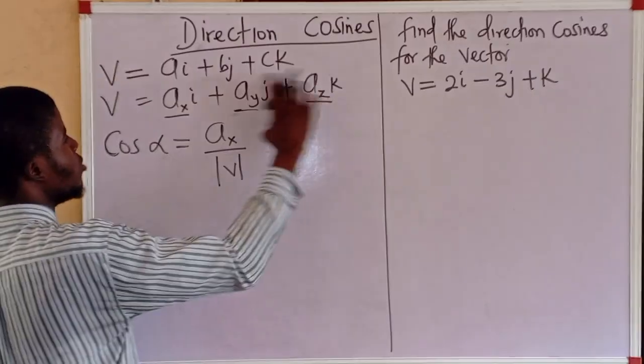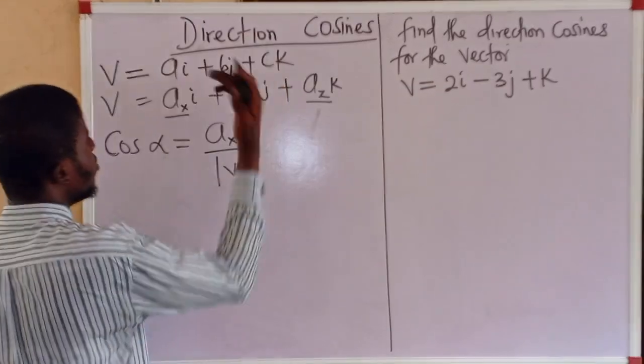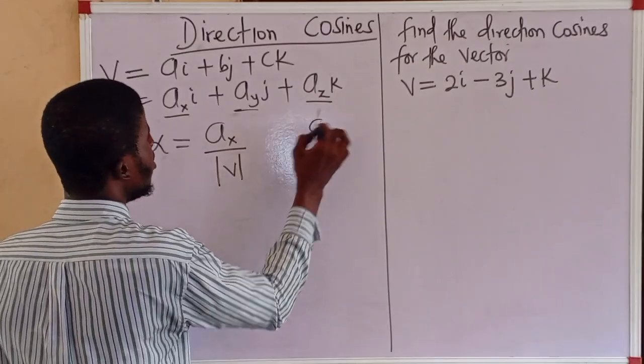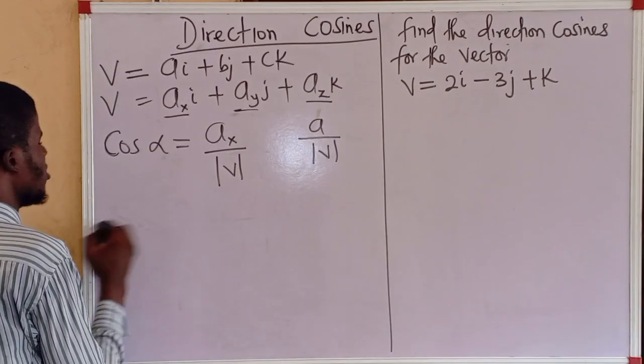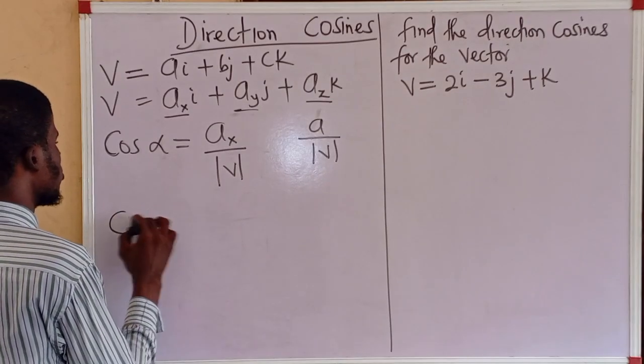Take note, I'm using this notation. If I'm using this vector, it will be a over the magnitude of v. It's the same thing.